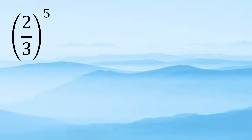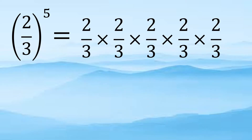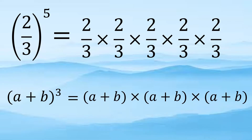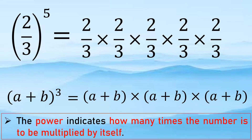So if we have 2 over 3 to the 5th, it means that 2 over 3 will be multiplied by itself 5 times. And if we have (a + b) to the 3rd, it means that (a + b) will be multiplied 3 times by itself. So the power indicates how many times the number is to be multiplied by itself.